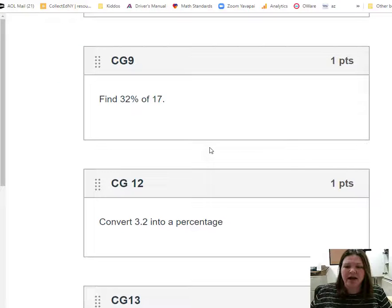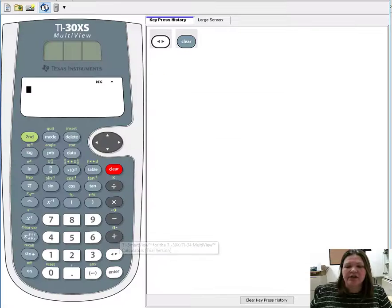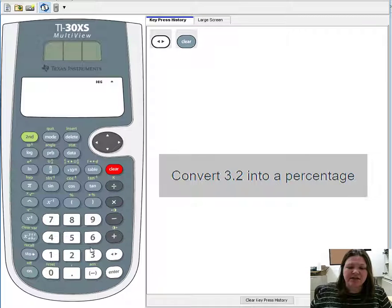So first one I have, we're going to look at CG12. Convert 3.2 into a percentage. Let's go give it a try. So if I want to convert it to a percentage, I need to type it in first - 3.2.